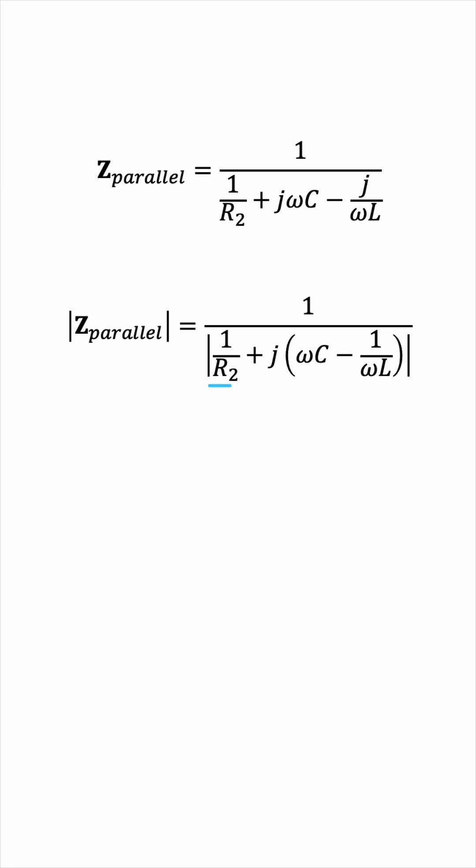You see, the real part is constant. 1 over R2, there's not much to do about it. But this imaginary part over here is a function of omega. So, when omega C minus 1 over omega L is 0, this will result in the least possible magnitude in the denominator, thereby maximizing Z parallel. Makes sense?